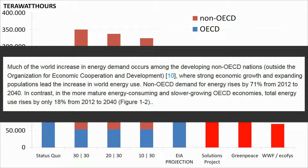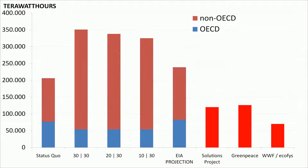In contrast, in the more mature energy consuming and slower growing OECD economies, total energy use rises by only 18% from 2012 to 2040. Growth will come from non-OECD countries. OECD countries may find an efficiency gain, perhaps even as much as 30%, but I think that I have reliably shown that this is an unlikely scenario and will be nullified entirely by the thirst for energy of a growing population in non-OECD countries.